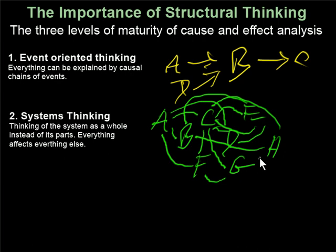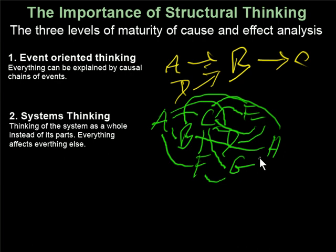Systems thinking is better than event-oriented thinking because you try to think of the system as a whole. But it's still lacking in structure and guidance. This shortcoming is fixed in the third level of maturity, which is structural thinking.